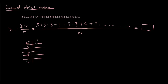Now we look at the frequency, which is how many times x occurs. So let's look at the number 3 — it has occurred 6 times. Let's look at the number 4 — 4 has occurred 5 times.